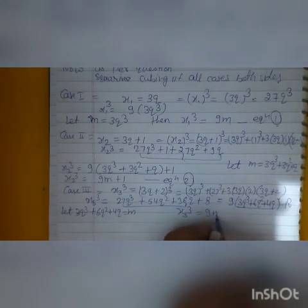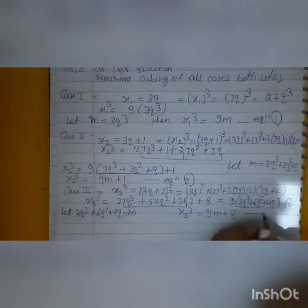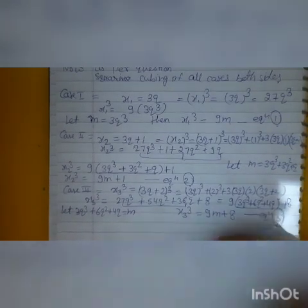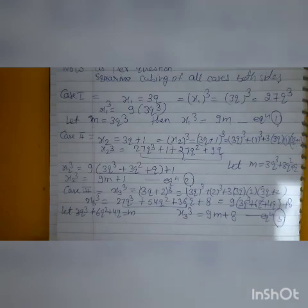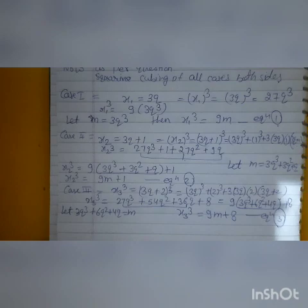Again in Case 3, x3³ equals (3q plus 2)³, which equals (3q)³ plus 3 into (3q)² into 2 plus 3 into 3q into 4 plus 8. So we have 27q³ plus 54q² plus 36q plus 8, which equals 9(3q³ plus 6q² plus 4q) plus 8. So how can we look at it?